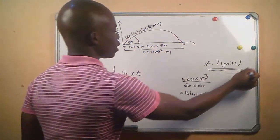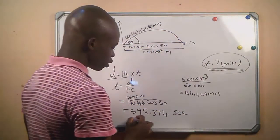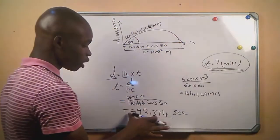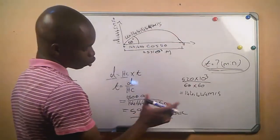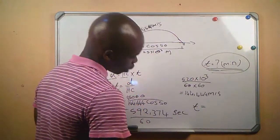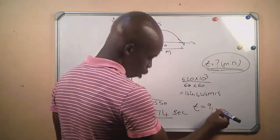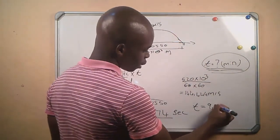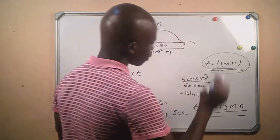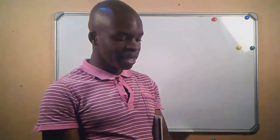The question asks for the time in minutes, so we divide by 60. Don't leave your answer in seconds or you will lose marks. The final answer is t = 9.873 minutes. That is our final answer for question one. We now move on to question two.